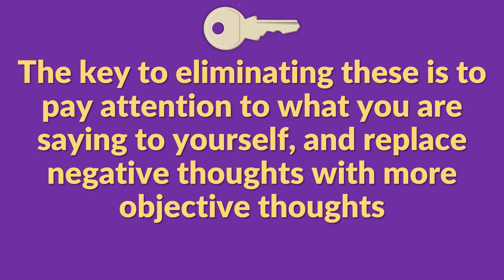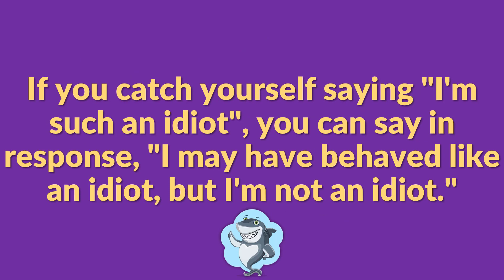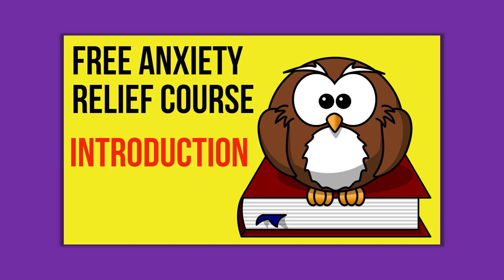The key to eliminating these from your self-talk is to pay attention to what you're saying to yourself. If you're feeling super stressed, think back to what you've been thinking about the last few minutes, then try to look at the situation more objectively and replace the thought with a more rational one. If you catch yourself saying 'I'm such an idiot,' respond with 'I may have behaved like an idiot, but I'm not an idiot.' You can also watch my free anxiety relief course here on YouTube, which covers all 10 thinking patterns and takes about 30 minutes. So the first stress management strategy is to improve self-talk.